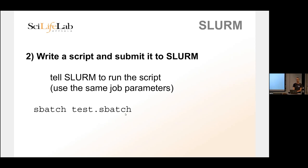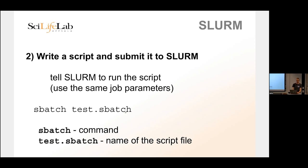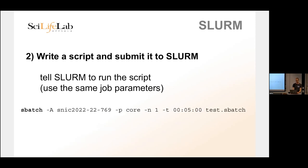Once you've written the script file using nano or another editor, you submit it with a command called sbatch. Just type sbatch and the name of the file — for example test.sbatch. File extensions don't really matter. If you have options written inside the file but want to temporarily change them, you can overwrite settings by providing them on the command line when calling sbatch, and any options not specified on the command line will use whatever is in the file.